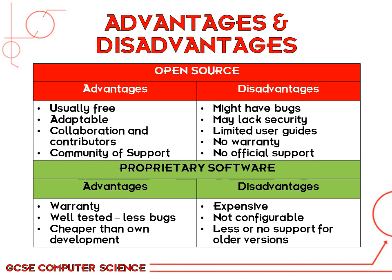I've prepared a revision slide for you which should be useful for remembering all the advantages and disadvantages of the two different types of software. Open source is usually free and it's adaptable — you can change it to whatever you want, adding different types of functions and features to customize it.